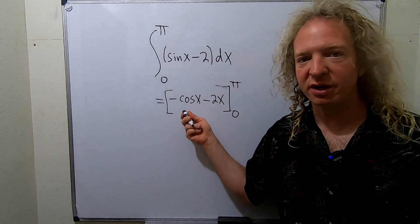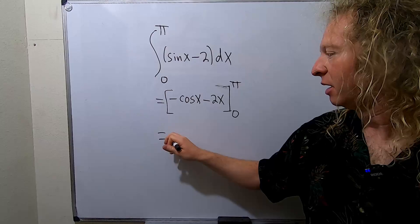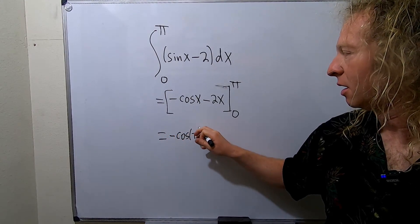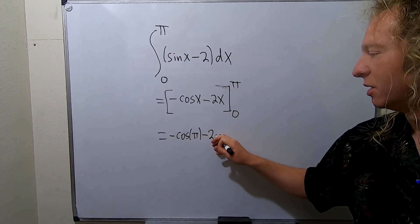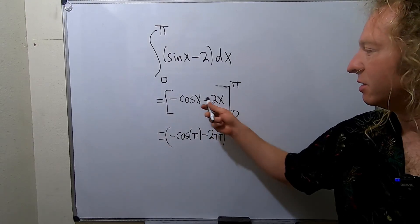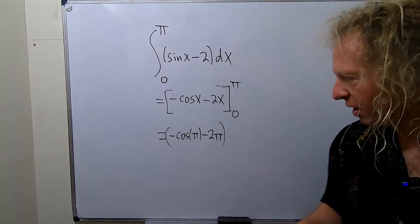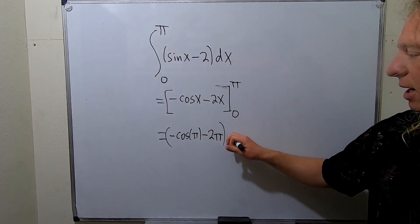So now we plug in the pi first. So plugging in the pi, we get negative cosine pi minus 2 pi. So this is just replacing all of the x's with pi's at this point. Then you always subtract no matter what. So minus.